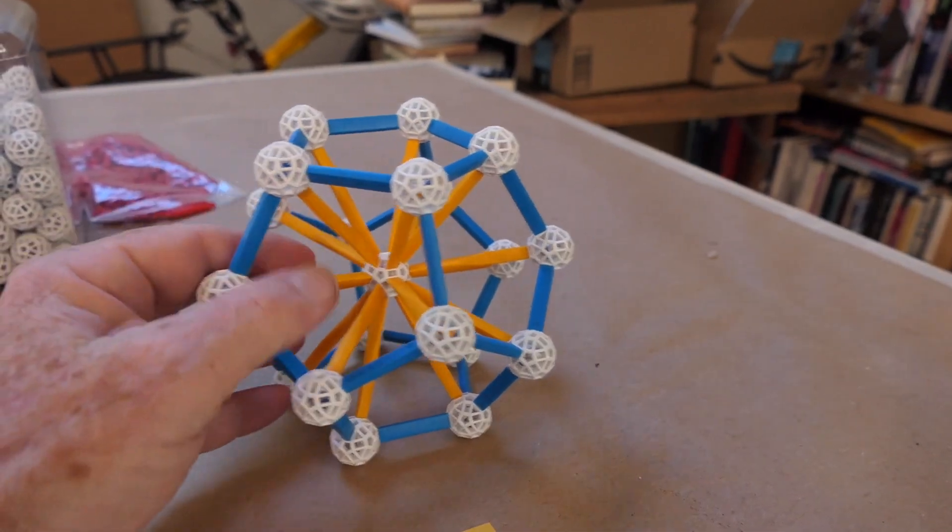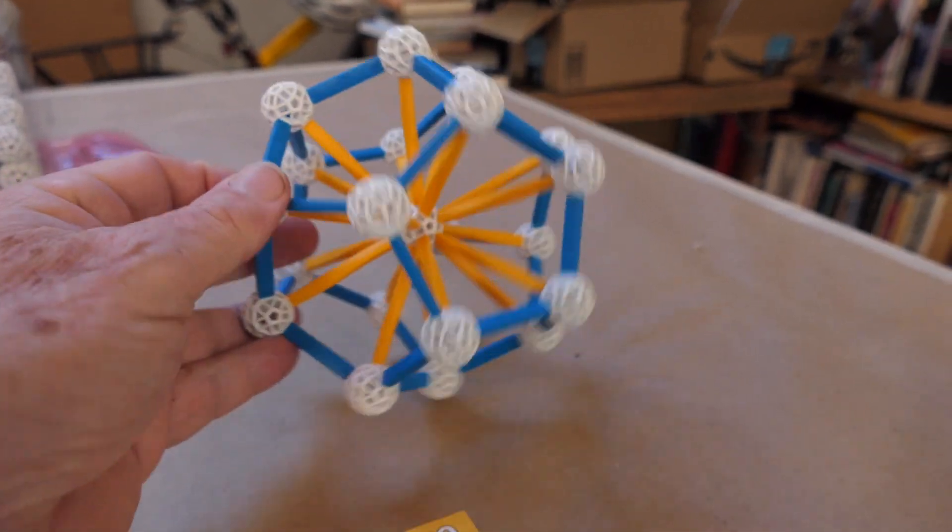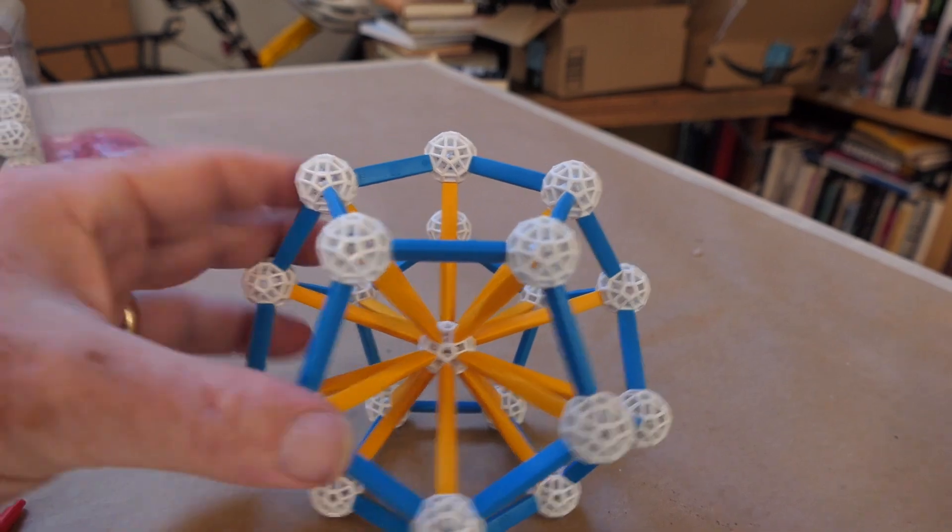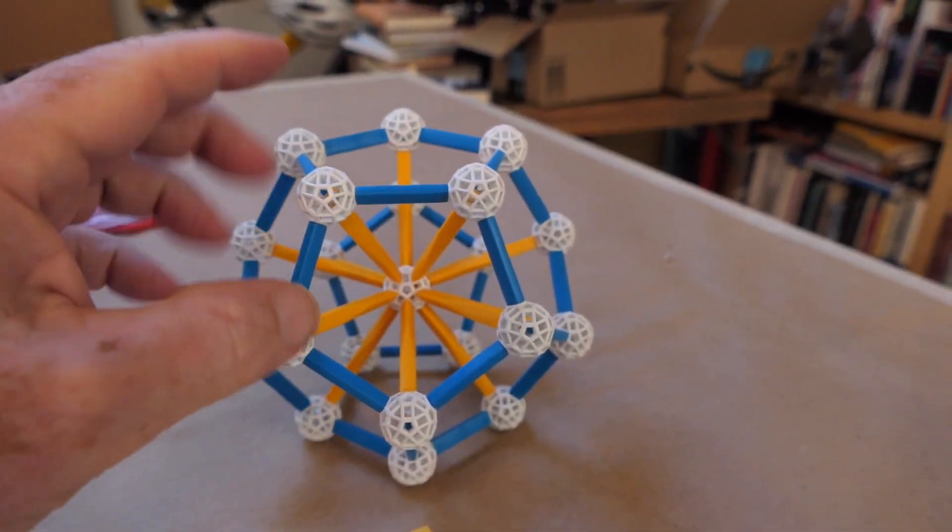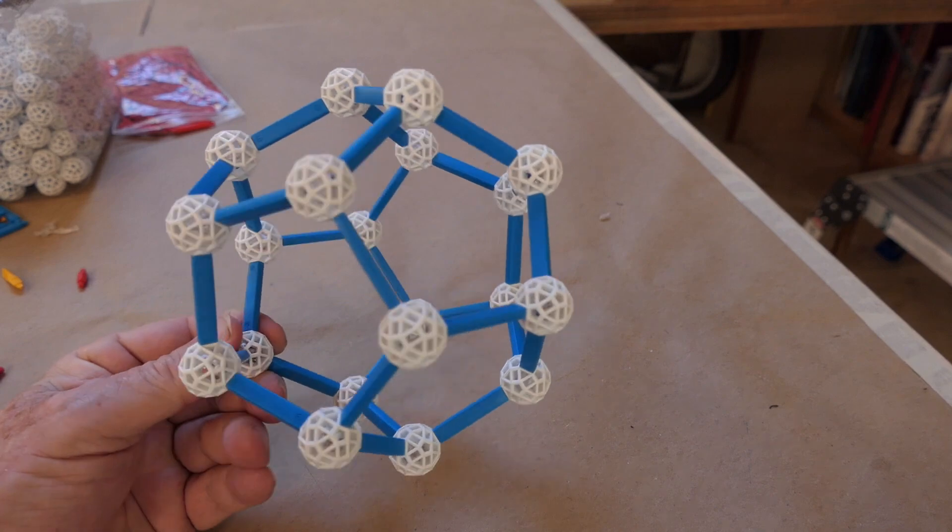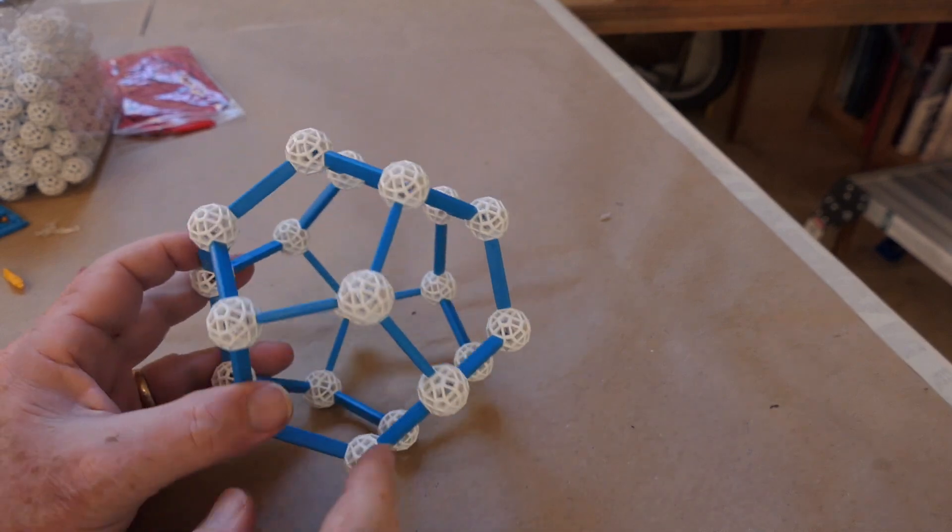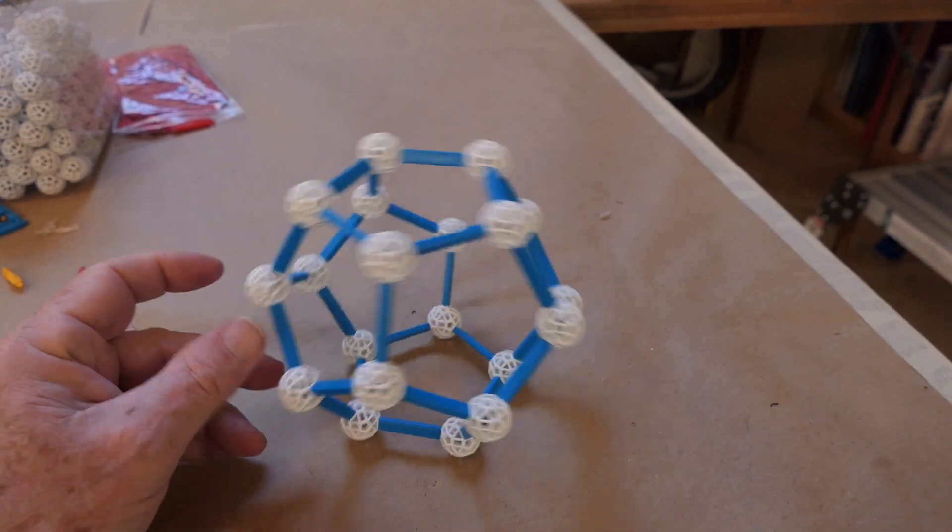This is the final dodecahedron with the 12 pentagons on each side. And what we're going to do now is we're going to remove the inner scaffolding of the yellow struts. And you could build this on your own if you wanted to without the yellow one.